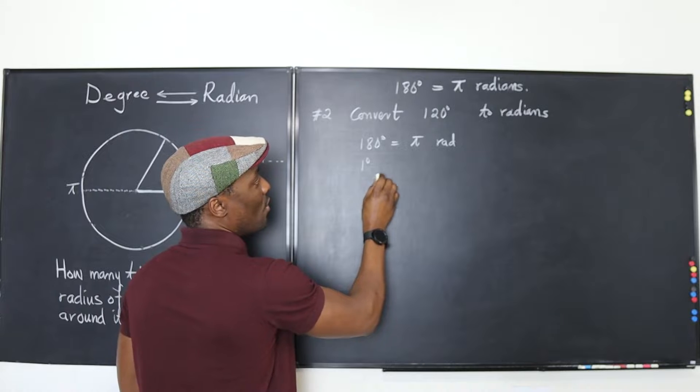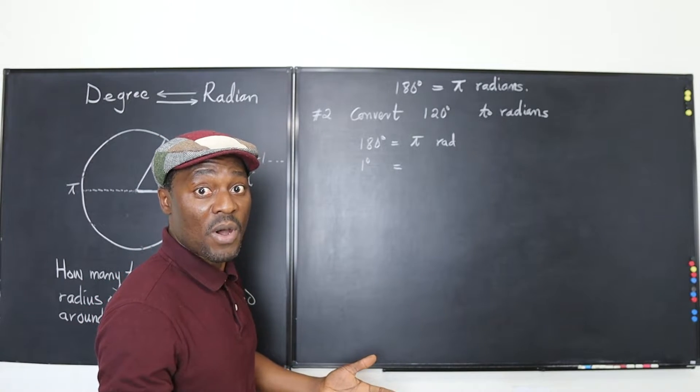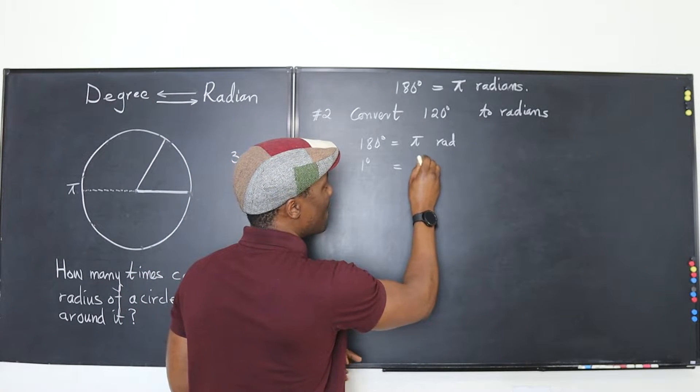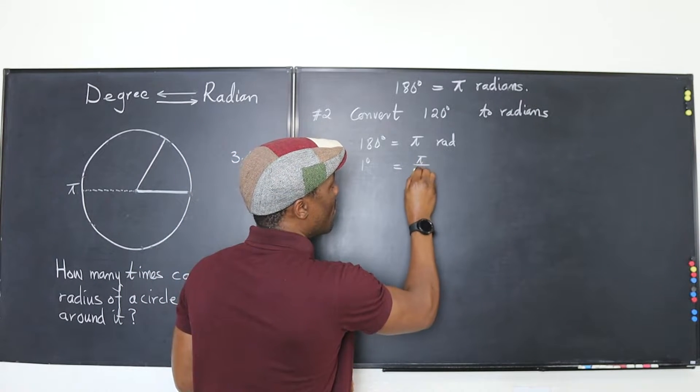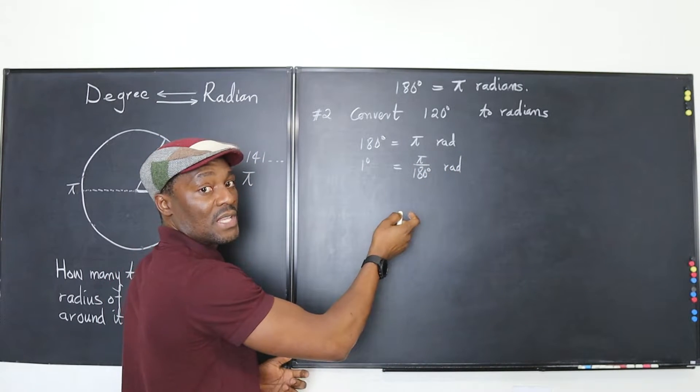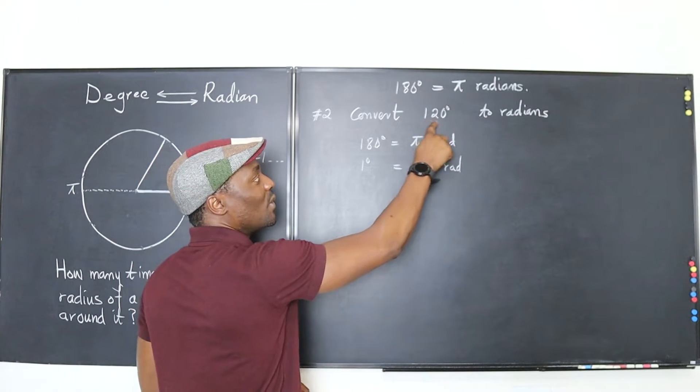What is 1 degree? Well what did I do to 180 to get 1? I divided it by 180. So I have to divide both sides by 180 degrees. So I have pi over 180 degrees radians.